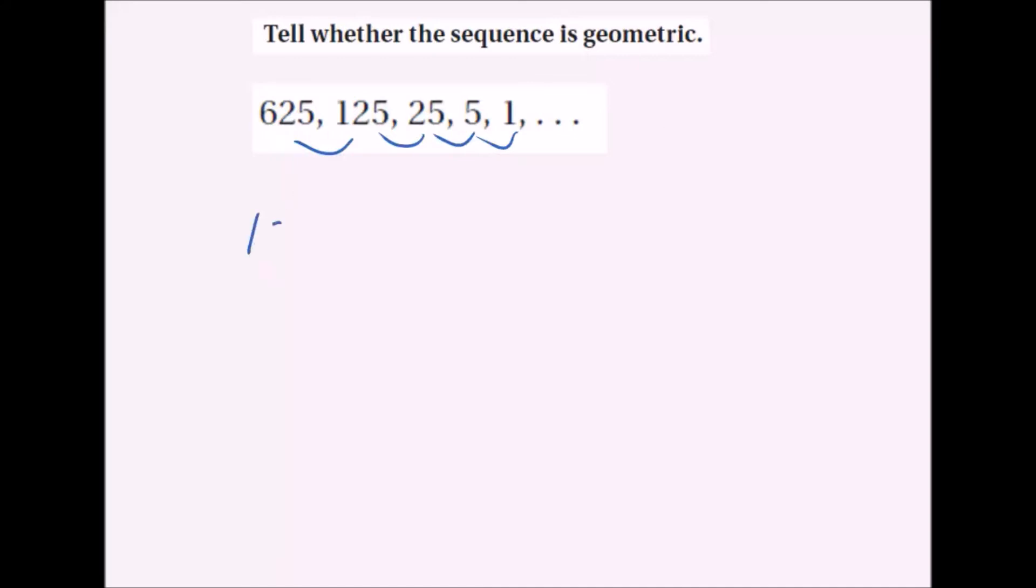So what we do is we put 125 divided by 625, and we find out that's 1 fifth. Then we do 25 over 125, that's equal to 1 fifth. 5 over 25 is equal to 1 fifth. So this is how we tell this is a geometric sequence.